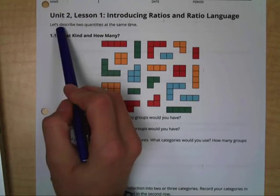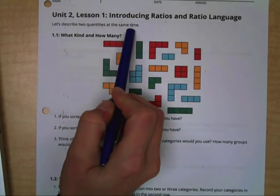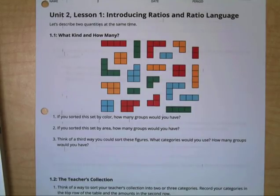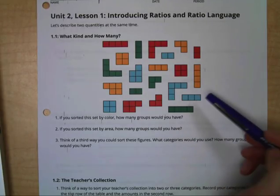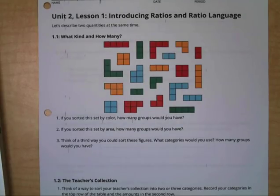So to begin, let's describe two quantities at the same time. If we have these different shapes, and I know yours are not in color, but you can use this to help you distinguish between the different colors and shapes. It says if you sorted the set by color, how many groups would you have? Go ahead and pause the video and figure out how many different groups you would have.